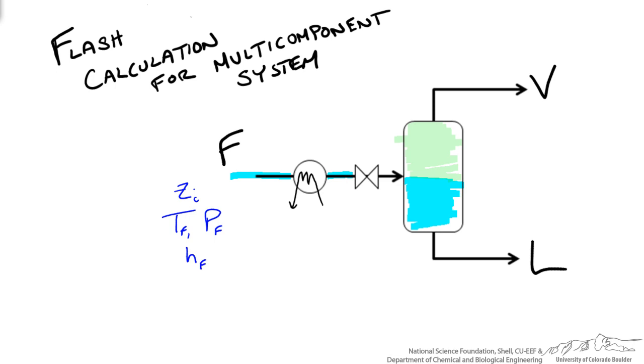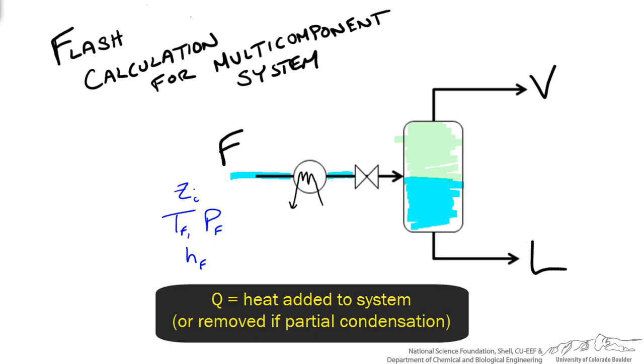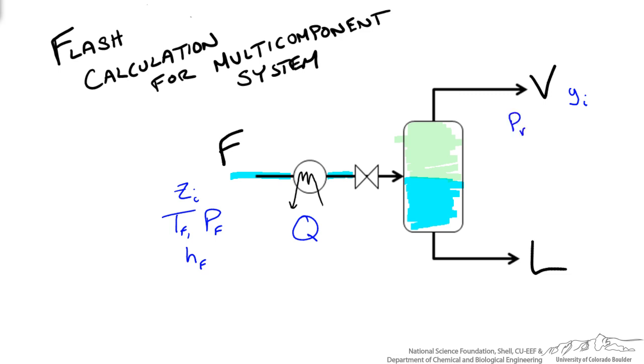We will also have an enthalpy associated with the feed stream. On the outlet side we are going to have composition of a vapor mole fraction, yi. We will also have a pressure associated with the vapor stream, a temperature, and an enthalpy. We will do the same thing for the liquid where xi denotes the liquid mole fraction of component i.